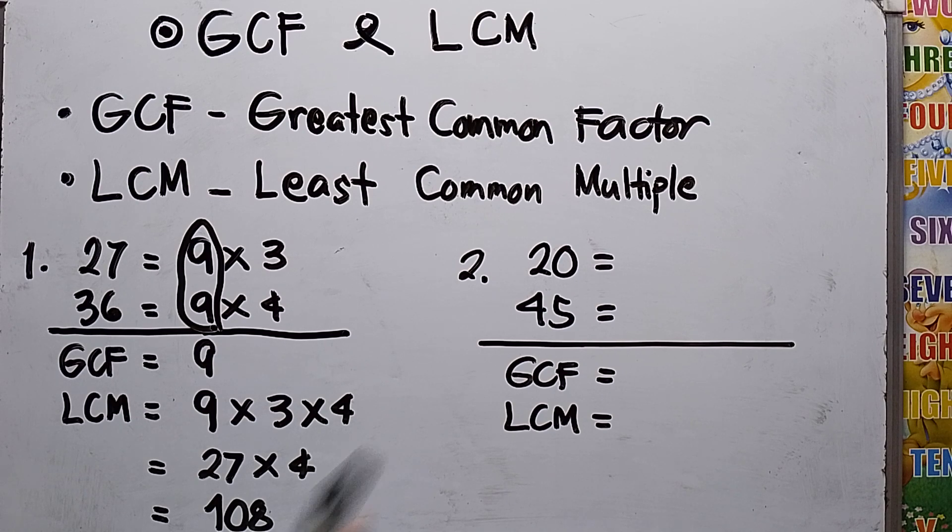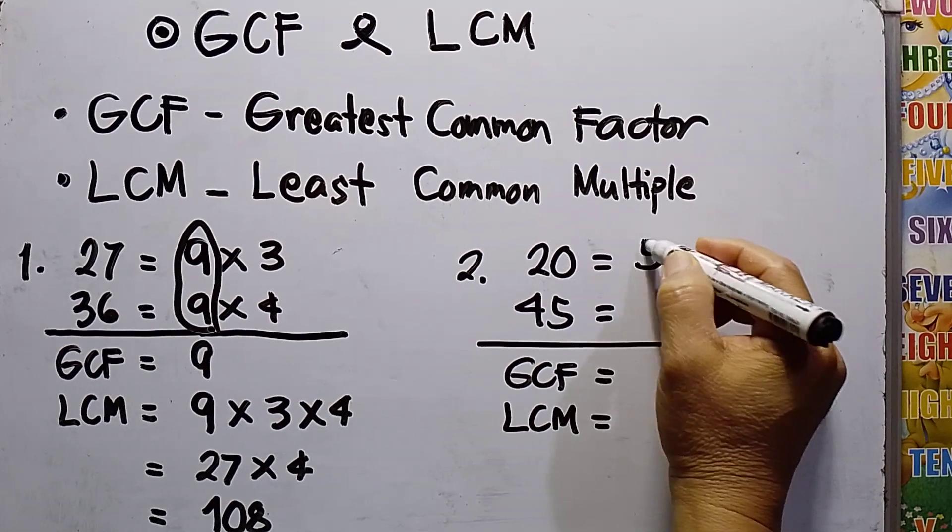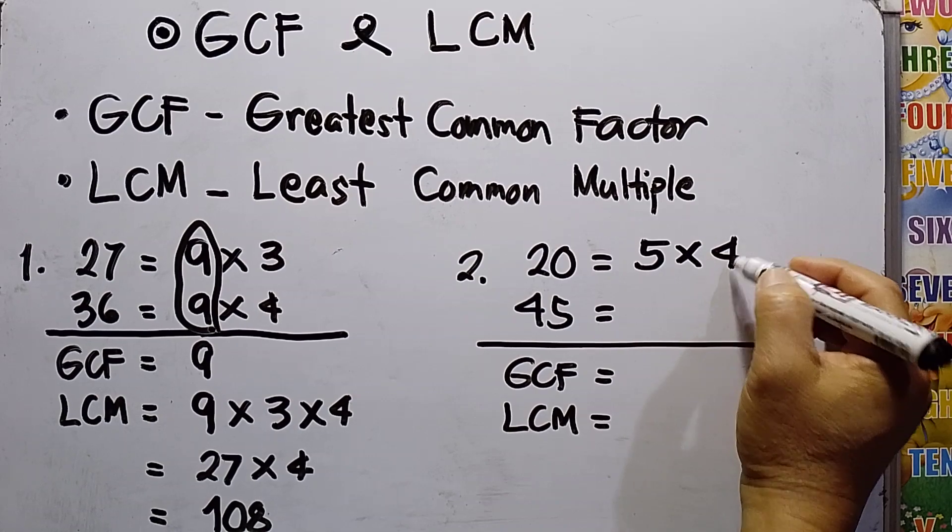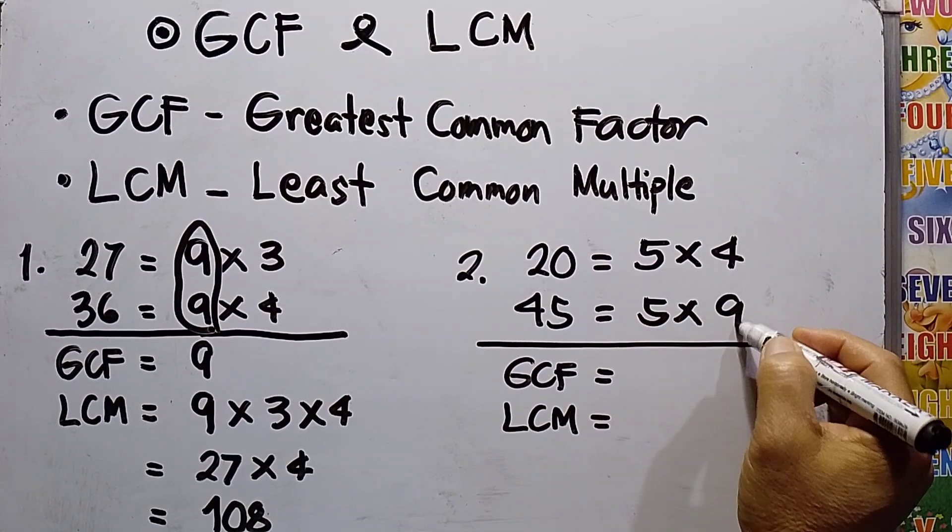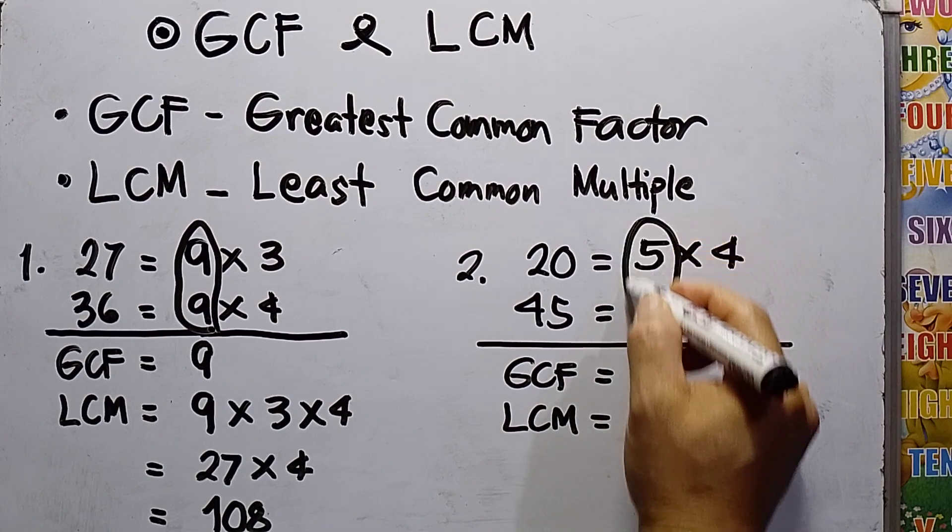For number 2, I have here 20 and 45. The greatest common factor of 20 and 45: this will be 5 times 4, then this will be also 5 times 9. So the common factor is 5. GCF is 5.